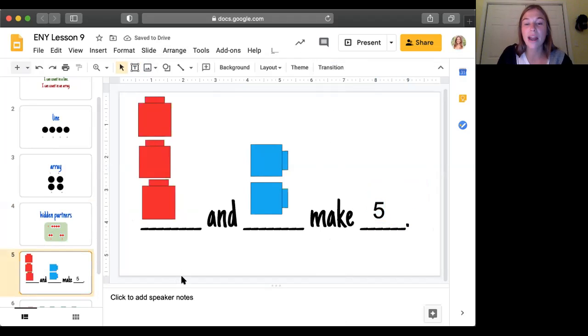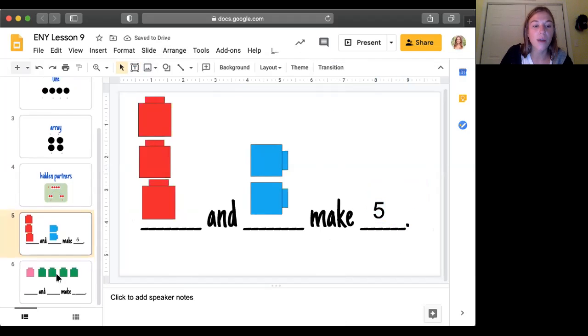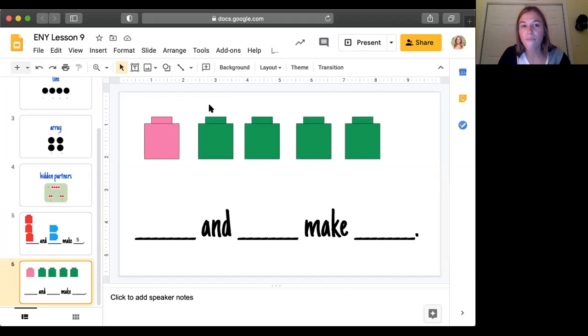All right, now scholars, Miss Weed is going to find one more hidden partner and then I want you to take out your pom-poms to see if you can find some hidden partners as well. So you're going to need five pom-poms to find some hidden partners of five.